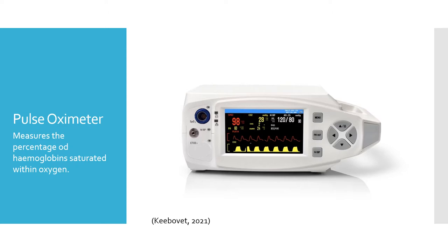Concerns while using the pulse oximeter is that it can give a false low or high reading. False readings can be due to motion artifact, peripheral vasoconstriction, mucous membrane pigmentation, and thick coats. High readings can be caused by hemoglobin abnormalities.